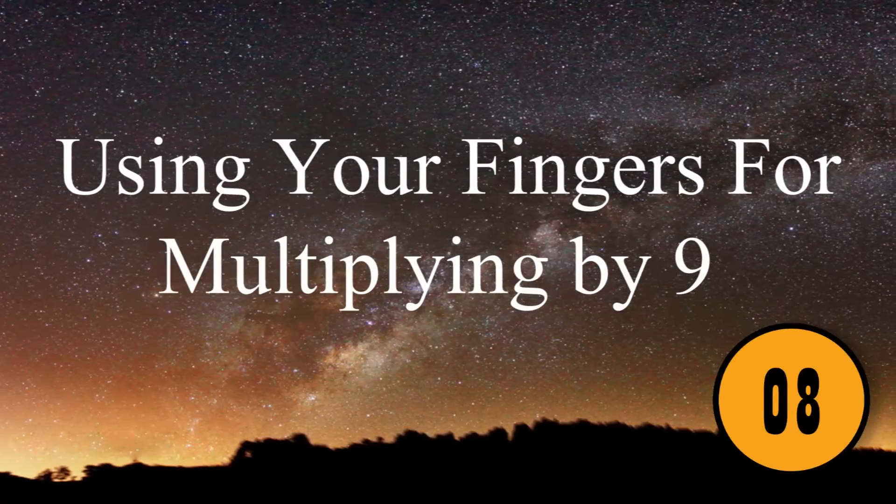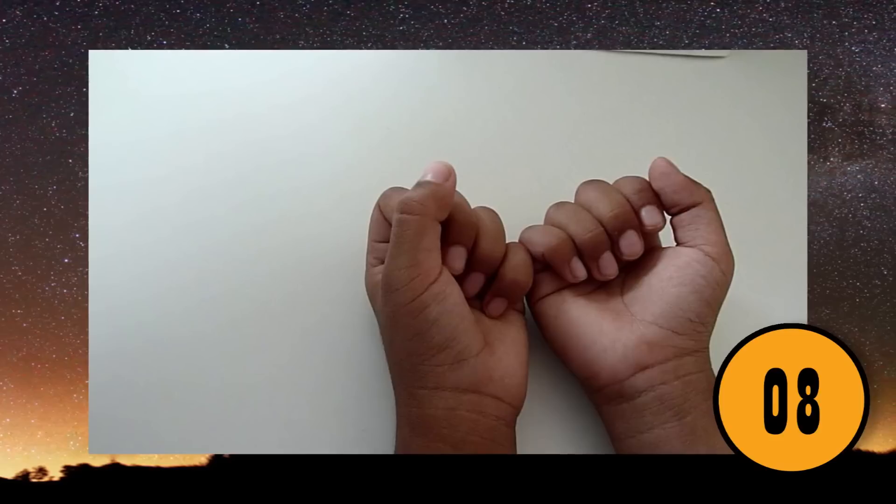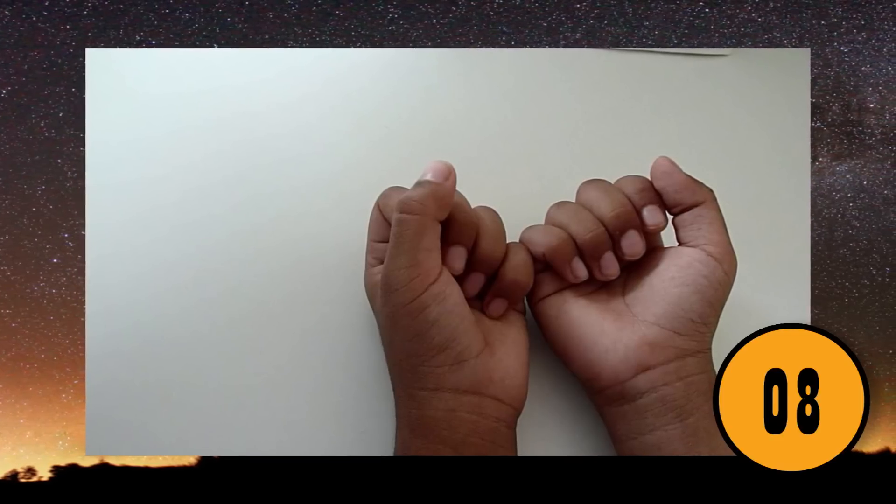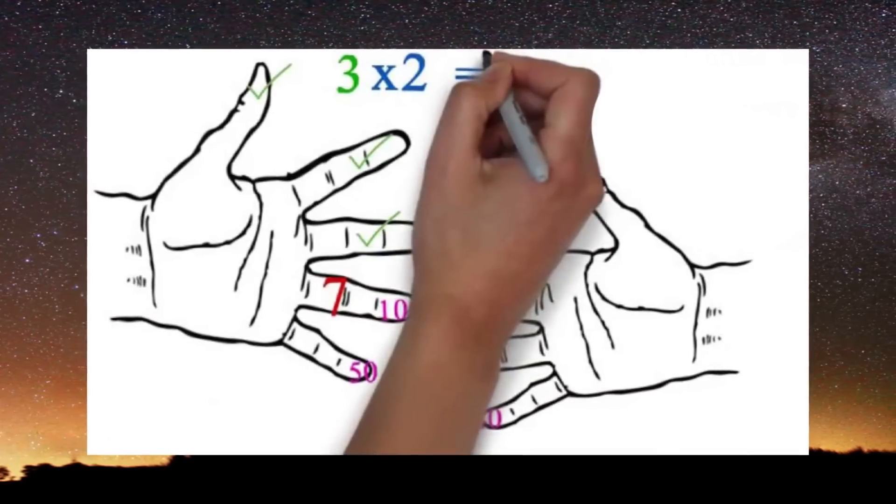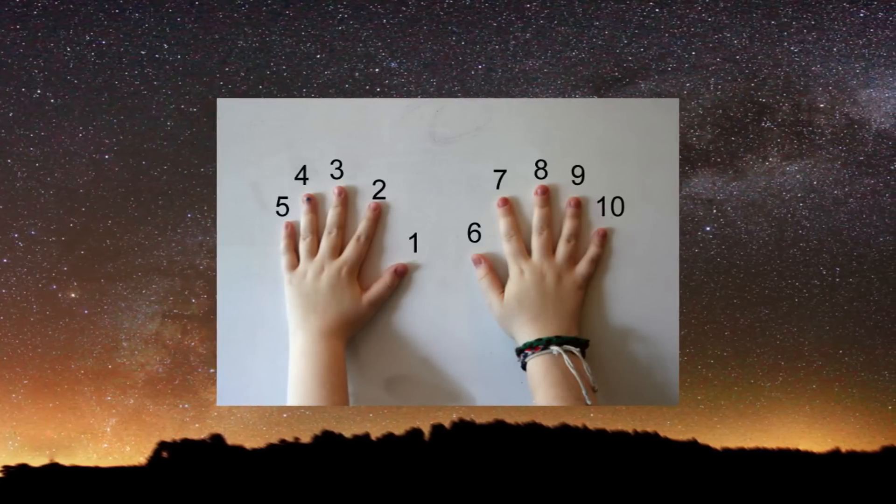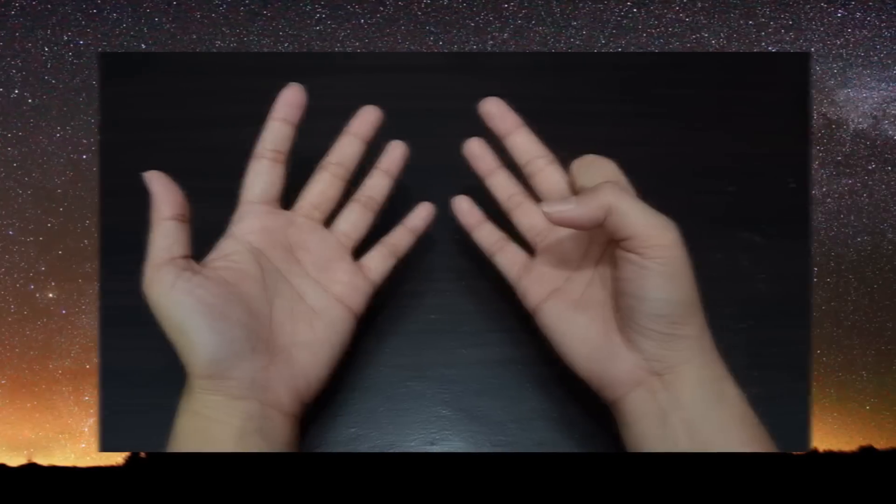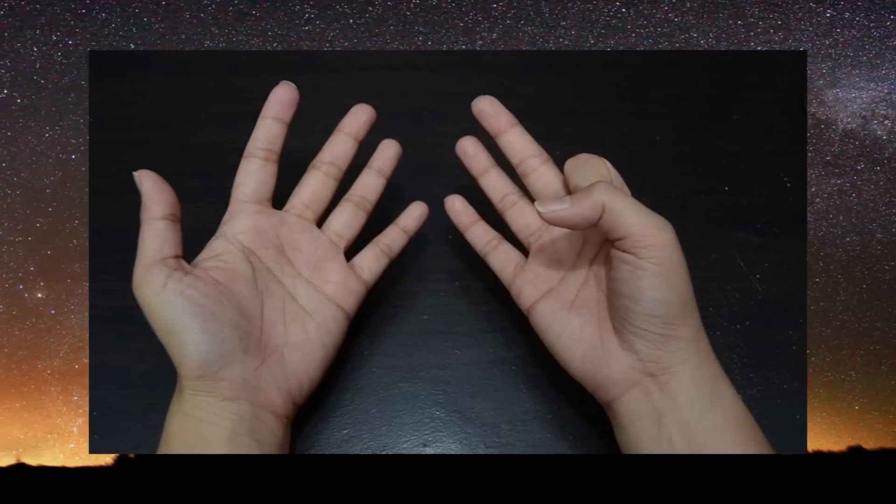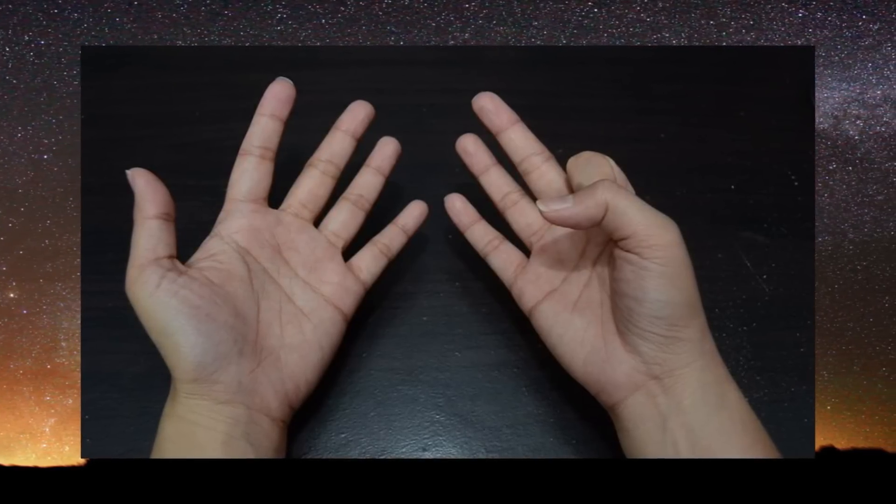8. Using Your Fingers for Multiplying by 9. You can do more than add and subtract using your fingers. You can also easily multiply two numbers. You simply need to assign each finger on your hands a number. Holding your hands facing you, the thumb on your left hand would be one, the index finger would be two, and so on. If you want to figure out 9 times 4, you would fold your fourth finger down, which would be the ring finger of your left hand.